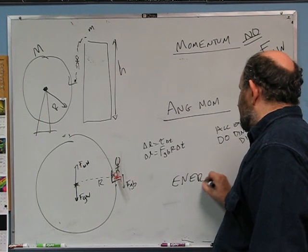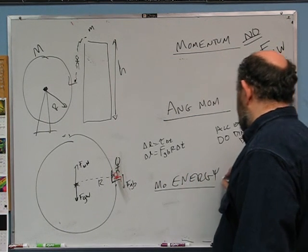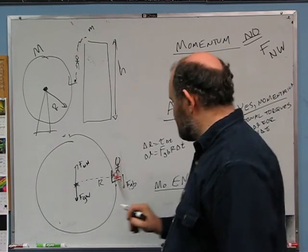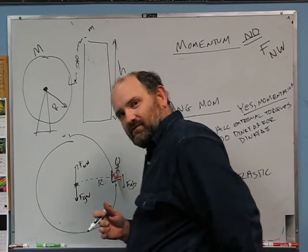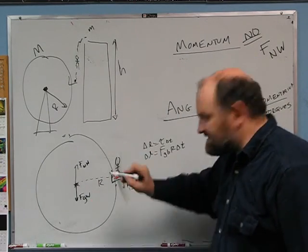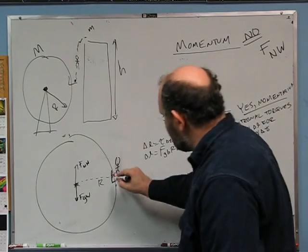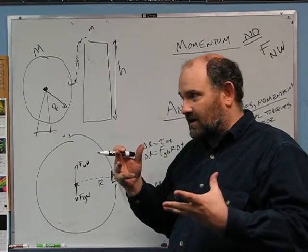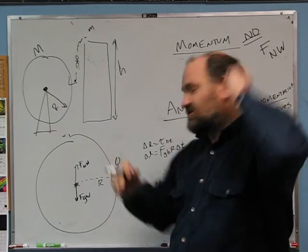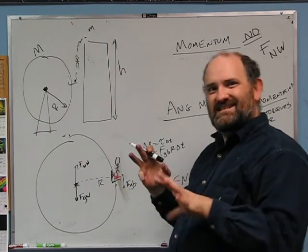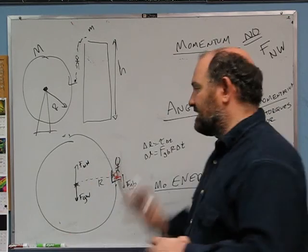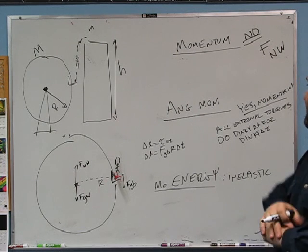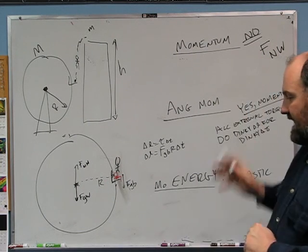Finally, energy is not conserved. Mechanical energy is not conserved because it's an inelastic collision — two things stick to each other. James Bond sticks to the chair — there's cotton candy all over the chair and he sticks into it. So it's an inelastic collision and mechanical energy is not conserved. In this collision, only angular momentum is conserved.